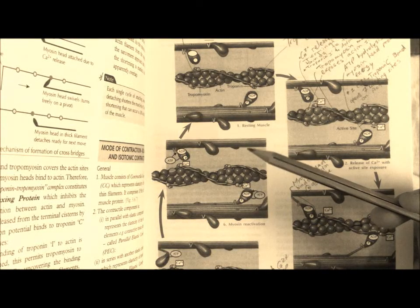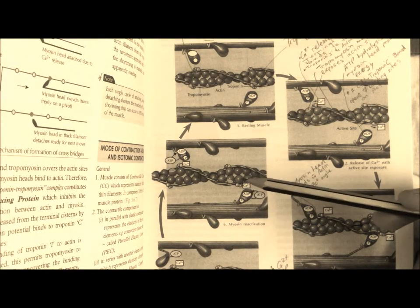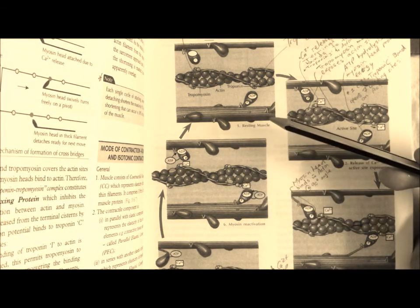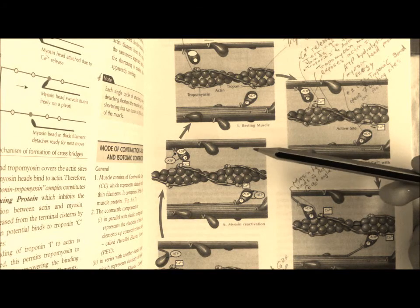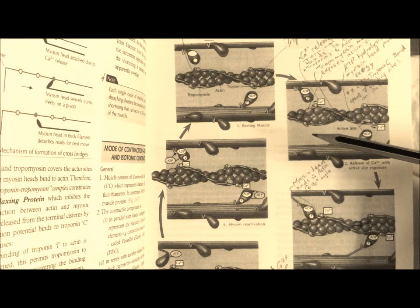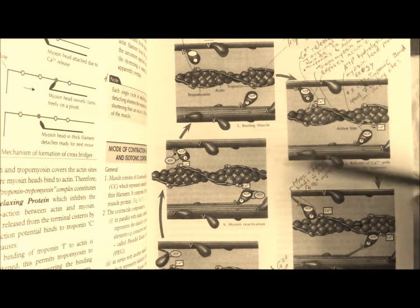It's important to note that a single cycle of attaching, swiveling, and detaching shortens the muscle by 1% and the maximum shortening that can occur, or the maximum amount of contraction that a muscle can undergo, is 30% of its total length.